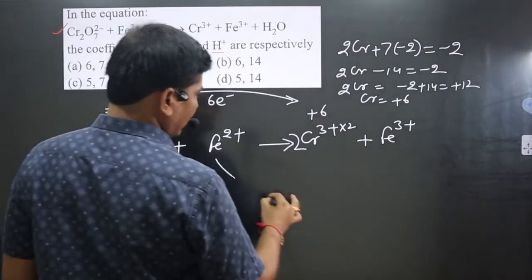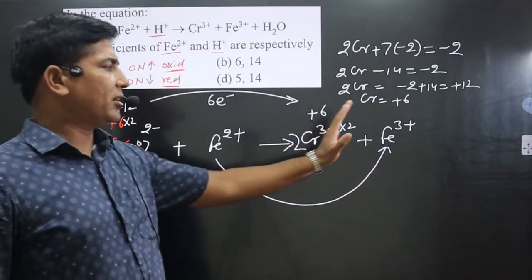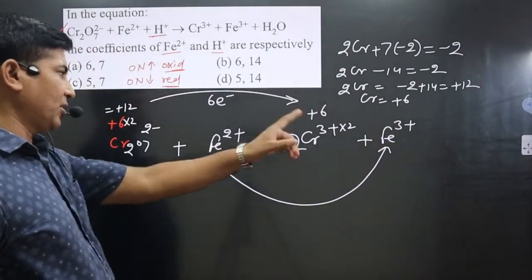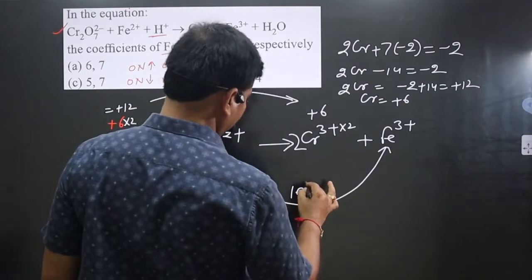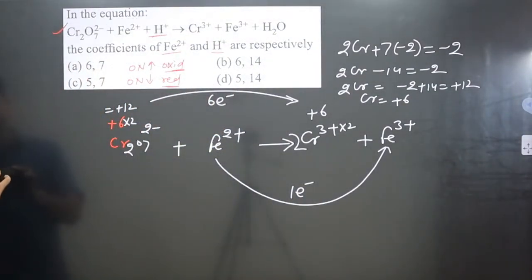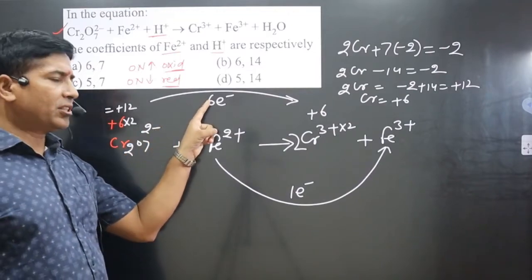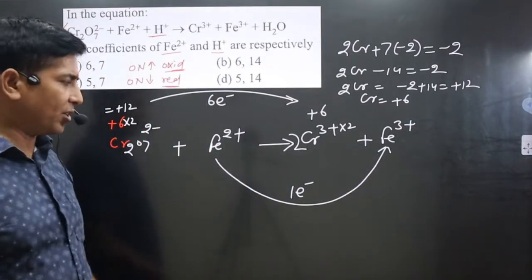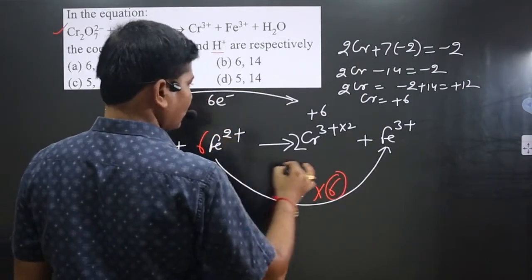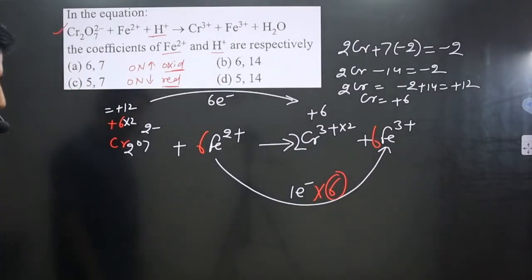For iron, the left side is +2 and the right side is +3, so the difference is 3 minus 2 equals 1 electron. Now we balance the electrons: the chromium half-equation has 6 electrons and the iron half-equation has 1 electron, so we multiply the iron half-equation by 6. This gives 6 Fe2+ and 6 Fe3+, and the electrons are balanced.